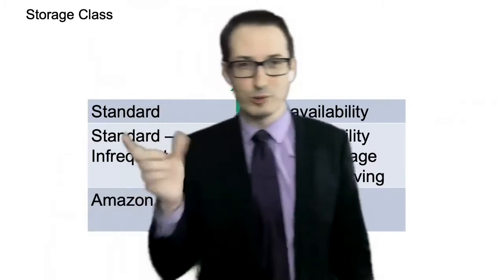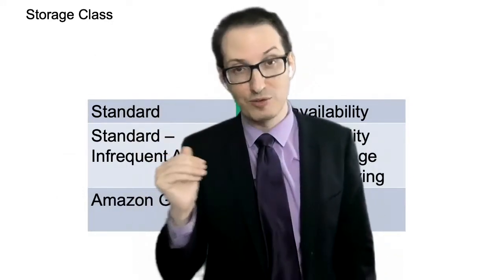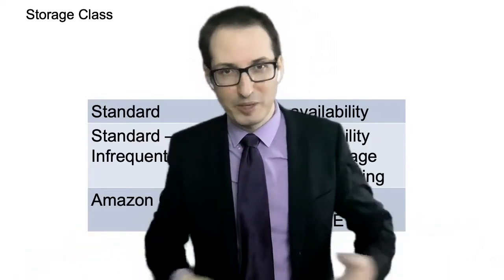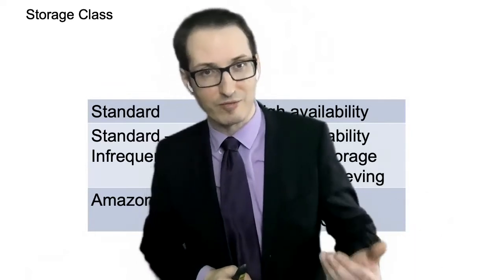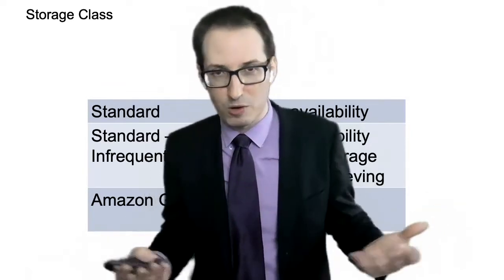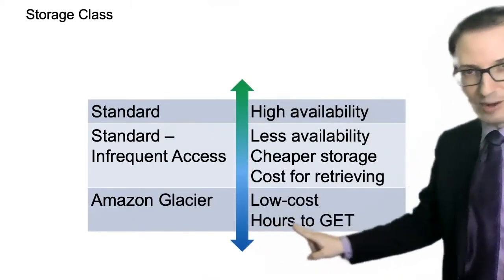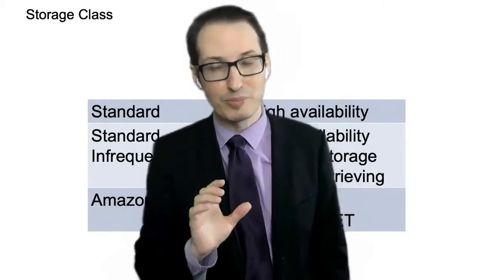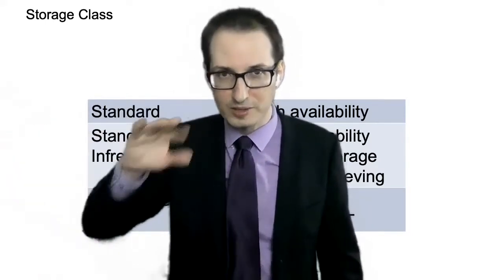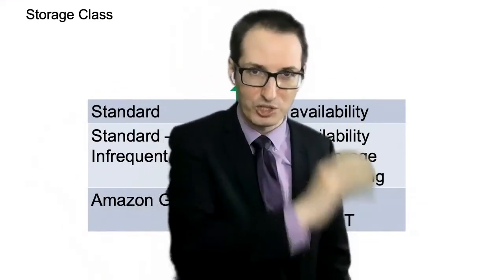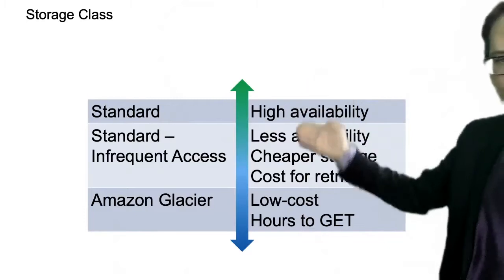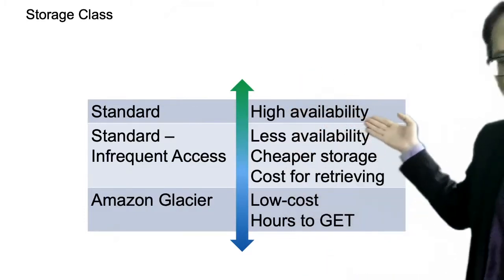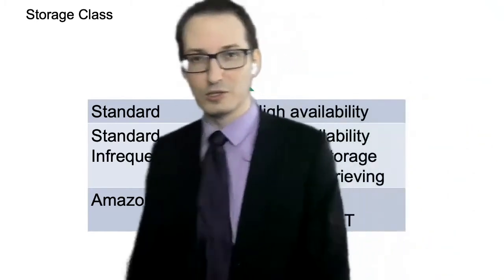For object storage, you can also pay less if you don't care about availability. For example, if it's the backup of your hard drive, maybe you can wait a couple of hours or give them 24 hours to return your data — then it's much cheaper. The reason it takes hours is that the data is typically stored on tape, which is extremely cheap. A human — or maybe a robot — needs to go fetch the tape, put it in a machine, and read it. This is why you have a choice: how much you're ready to pay versus the availability of the data and how fast you want it back.